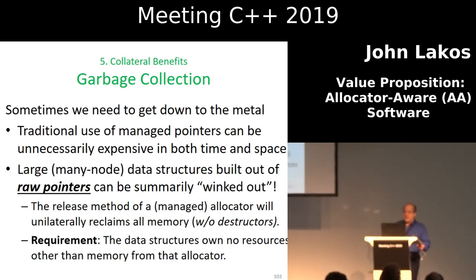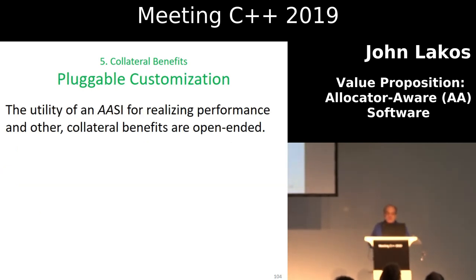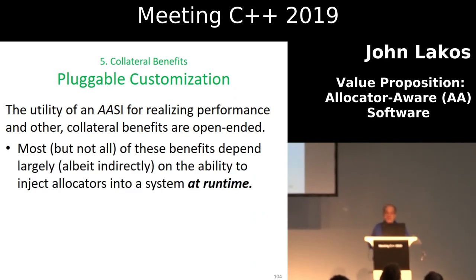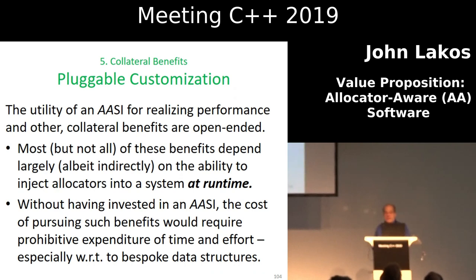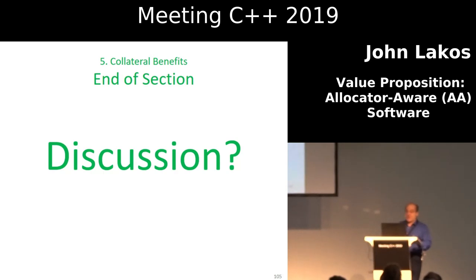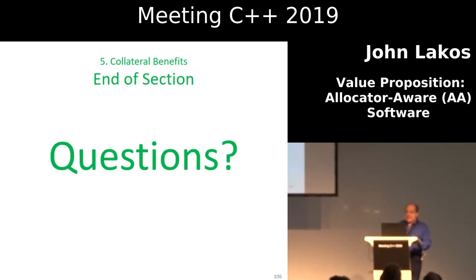When you really need to get down to the metal, allocators are a good thing to use. You can actually use allocators as part of your architecture — for example, instead of using a bunch of smart pointers, you can use raw pointers, build up a data structure, and not worry about cycles. You can simply wink out the entire data structure using raw pointers. This can be used as a design as well as an optimization — just release it and it all goes away in one shot. This is much faster and safer than doing it the other way.